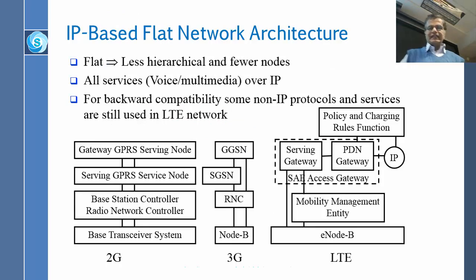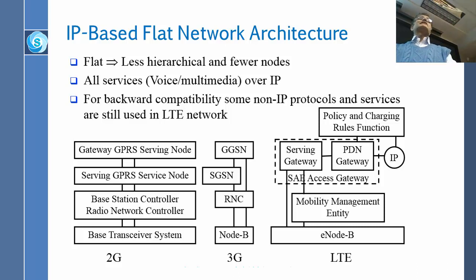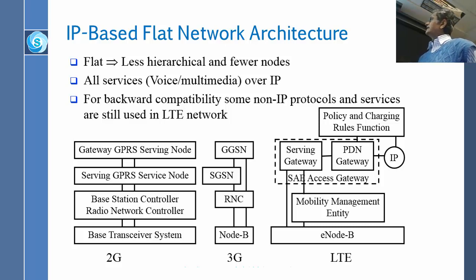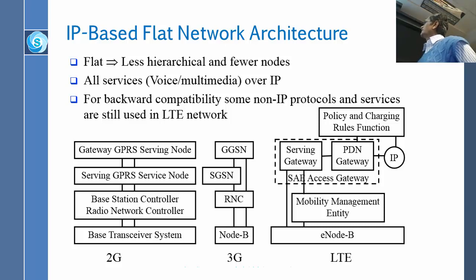Now, a second thing LTE tried to do was to get rid of as many boxes as possible and simplify the architecture. In 2G we had SGSN and GGSN for data. In 3G we still had those, plus the RNC. In LTE, we still actually need some more boxes — in particular, four boxes — but everything goes on IP. Even voice goes on IP.